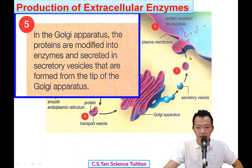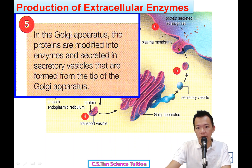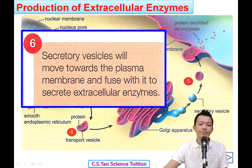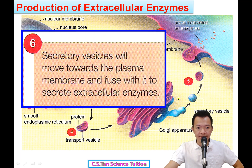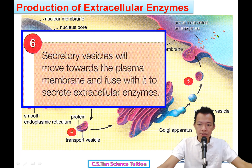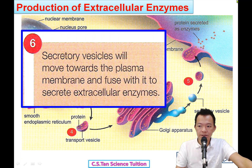What happens to the secretory vesicles — 这些小泡泡到底跑去哪里? They will go to the plasma membrane and fuse together with it — 跟 plasma membrane 结合在一起. Finally, the enzyme is excreted through the plasma membrane. The secretory vesicles move towards the plasma membrane and fuse with it to secrete the extracellular enzymes — 把这些 extracellular enzymes 分泌出来放出来. This is your full answer for the production of extracellular enzymes.